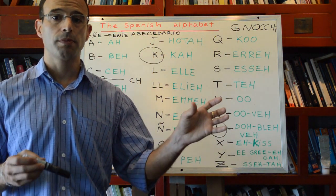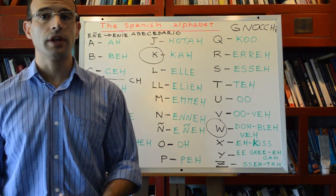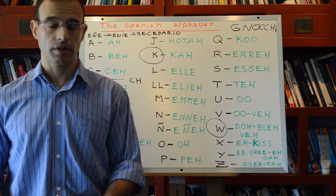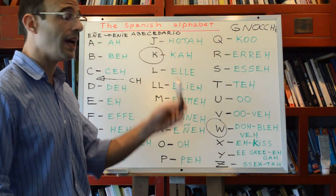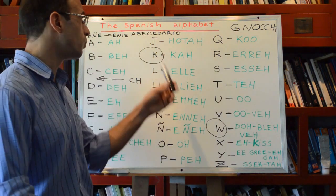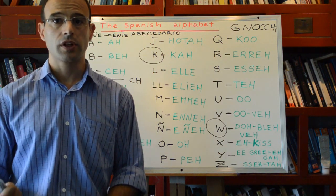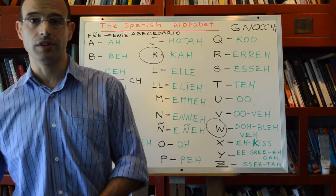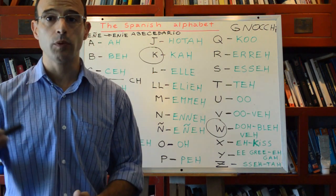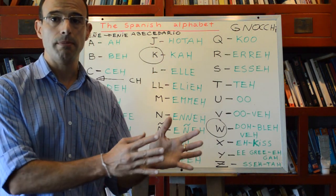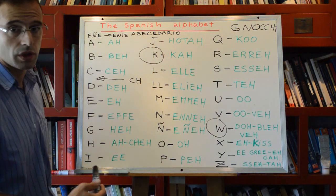However, they are used for some foreign words that are incorporated into Spanish. For example, the word kilogram is written with K. Kilometer is written with K. Why? Because these are foreign words coming from Greek. Kilo means a thousand in Greek.